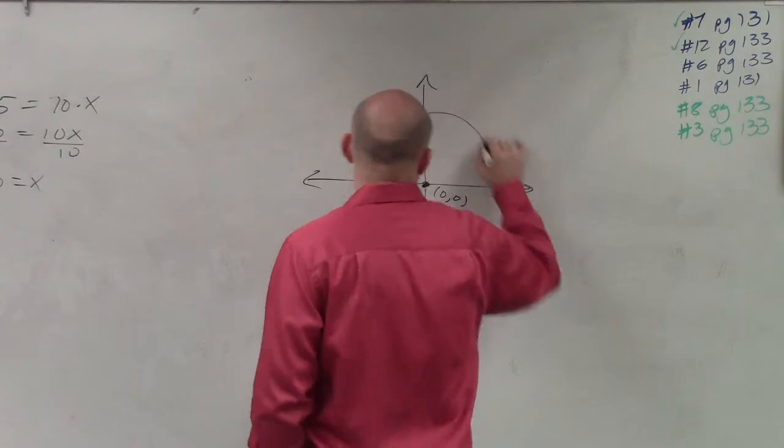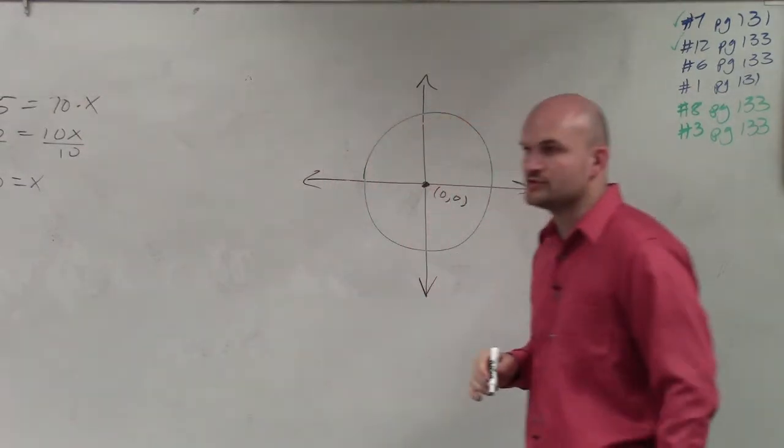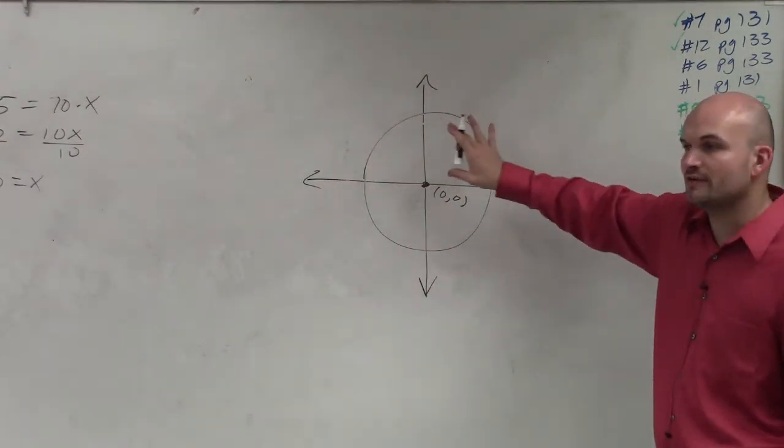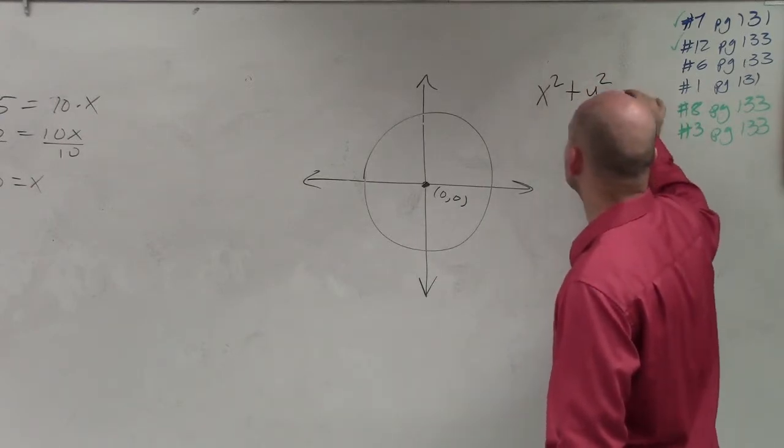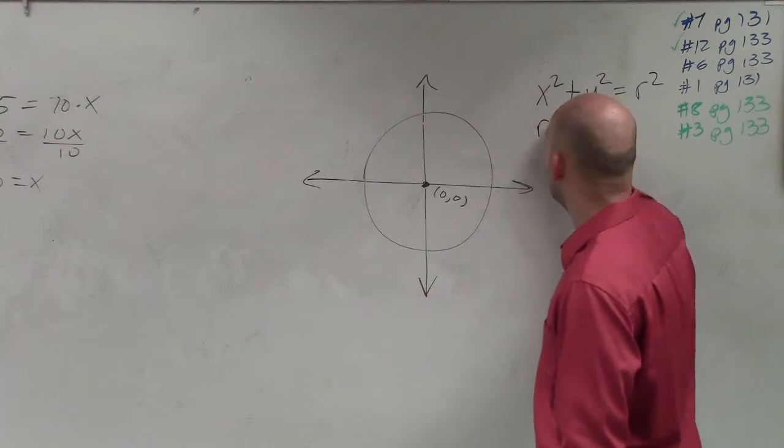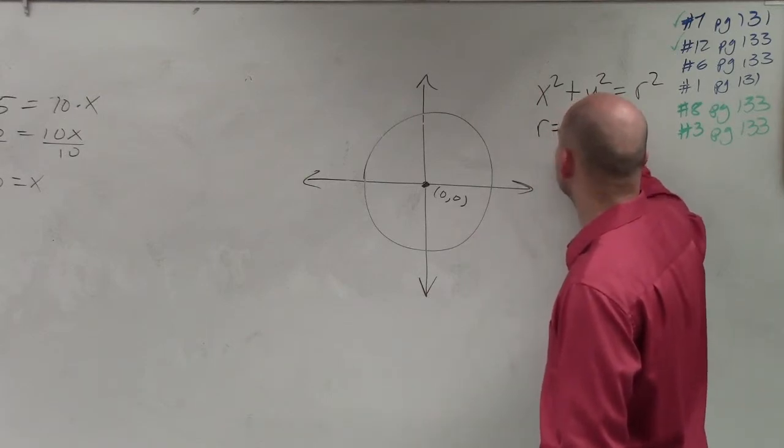So if I just have a general circle, and we're not talking about units right now, the general equation of a circle is x squared plus y squared equals r squared, where r equals the radius.